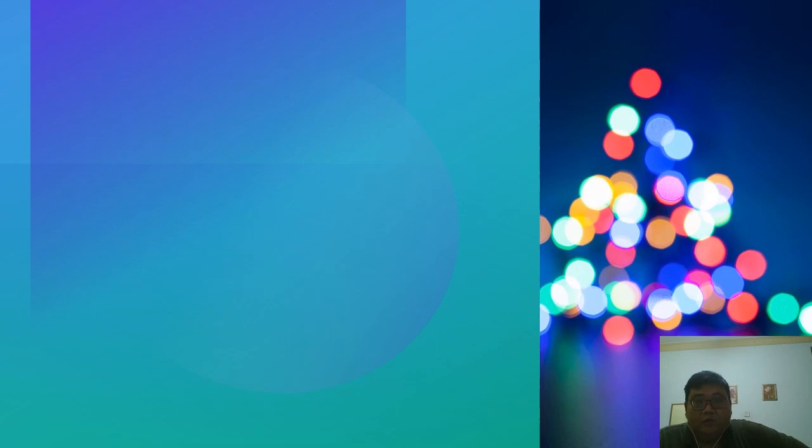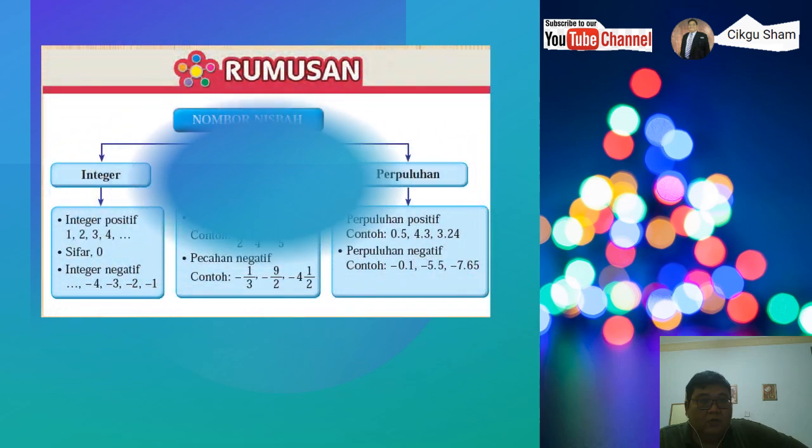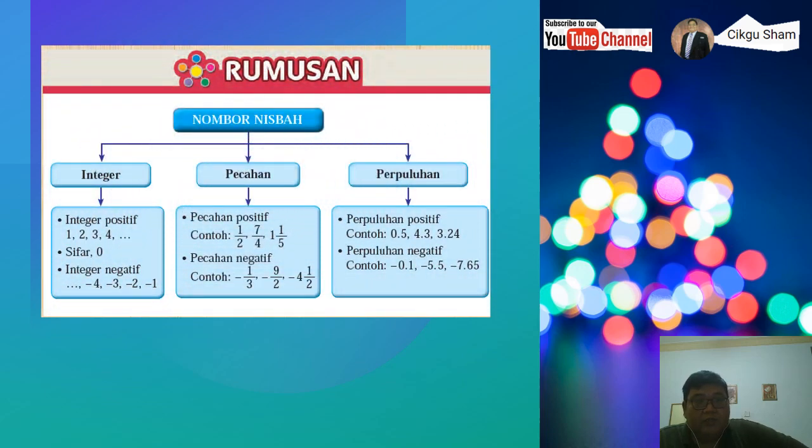Nombor nisbah terbahagi tiga yang besar, iaitu integer, integer positif, sifar, dan integer negatif. Pecahan ada dua, pecahan positif, pecahan negatif. Perpuluhan ada dua, perpuluhan positif dan perpuluhan negatif. Kemudian kita dah lihat apa itu nombor nisbah. Nombor nisbah adalah nombor yang boleh ditulis dalam bentuk P per Q dengan syarat P atau pengangka dia mesti integer, Q juga atau penyebut juga mesti integer, dan Q tak boleh sifar. Jadi ini adalah nombor nisbah.